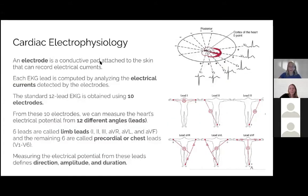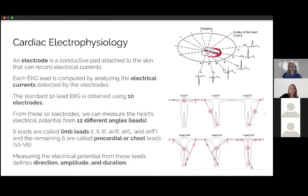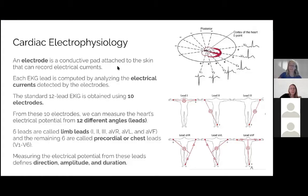Back in the 1900s, the inventor of the EKG was using buckets of electrolyte solution, putting patients' limbs in different buckets to simulate electrical potential. Now we just put a sticker on the chest. An electrode conducts electricity from the heart, and from ten electrodes we record electrical currents. Based on how we compare two electrodes, we get a lead — and that lead is what's shown on the EKG paper.